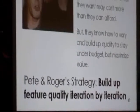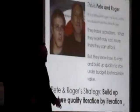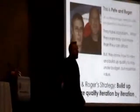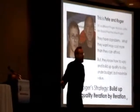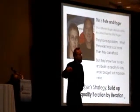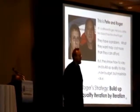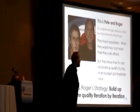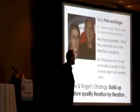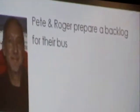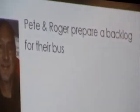They want a bus, and they know that they can have it — not with the money they've got. But they've got a strategy. They have a strategy for building things up that will allow them to get it for the money that they've got. So they're going to leverage iterations to build things up. So Pete and Roger prepare a backlog for their bus.